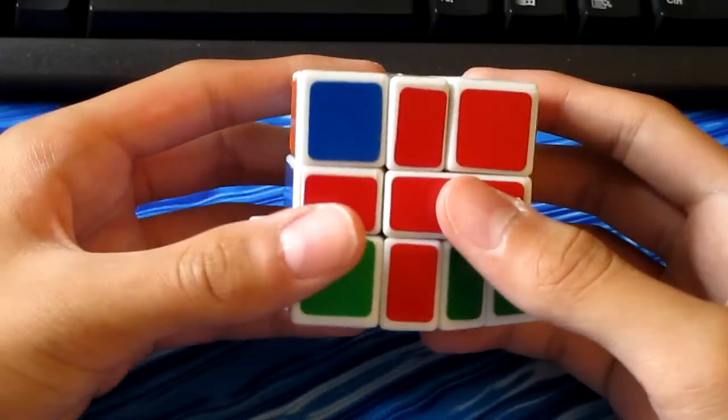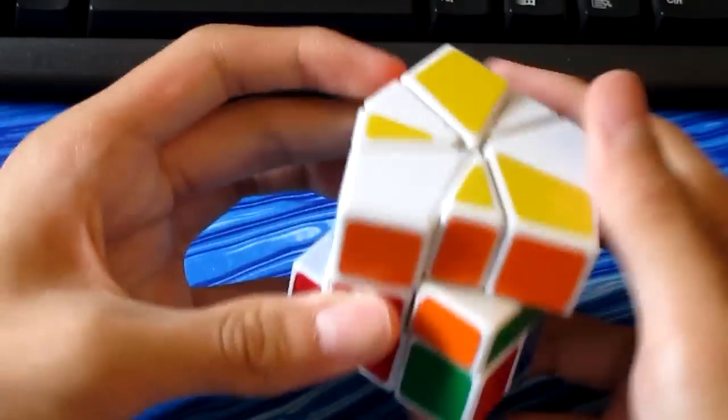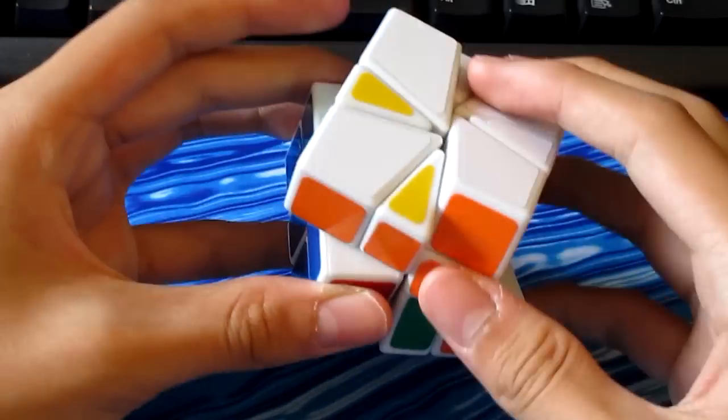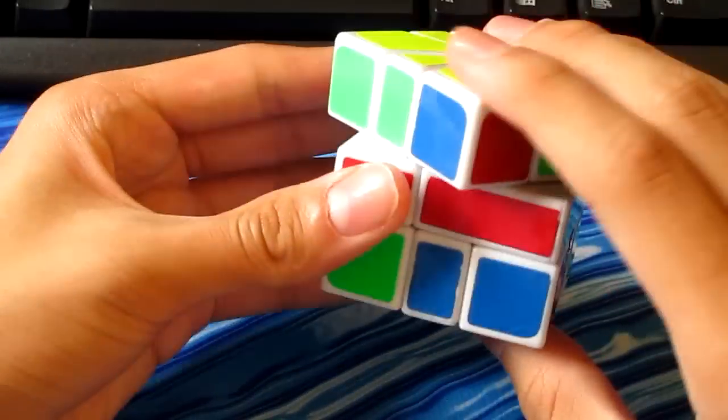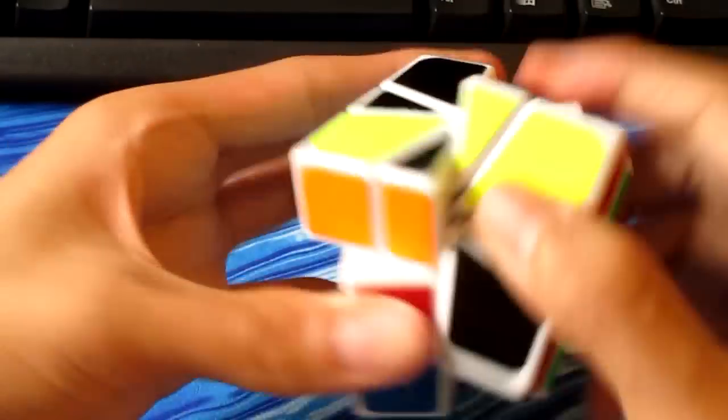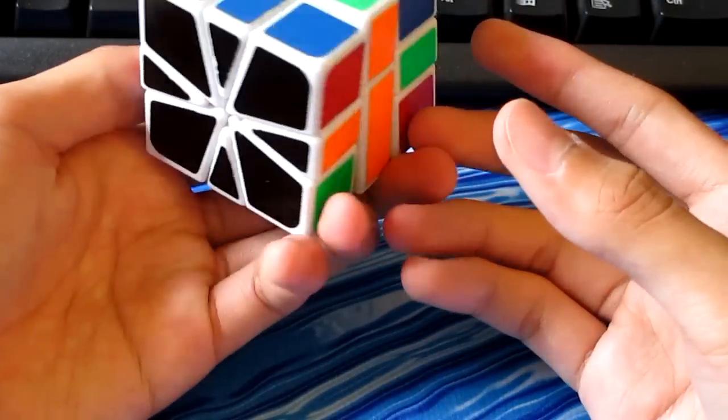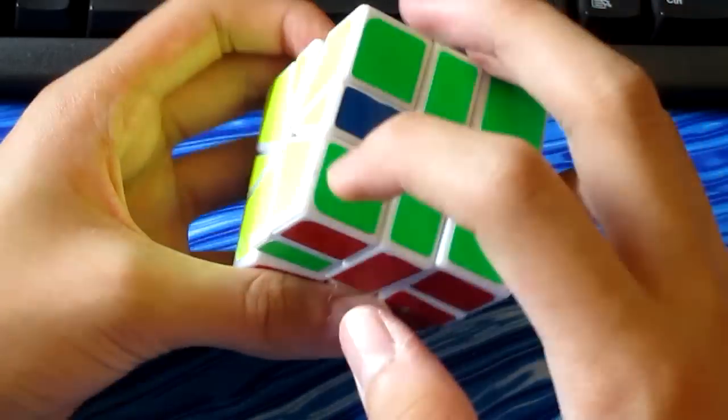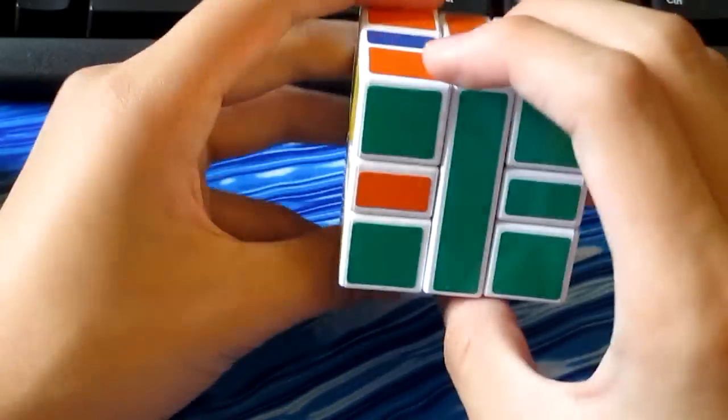There are five basic steps to solve the square one: cube shape, corner orientation, edge orientation, corner permutation, and edge permutation.